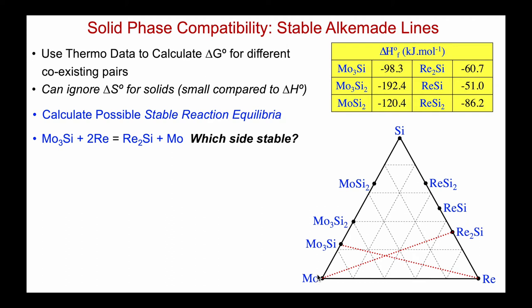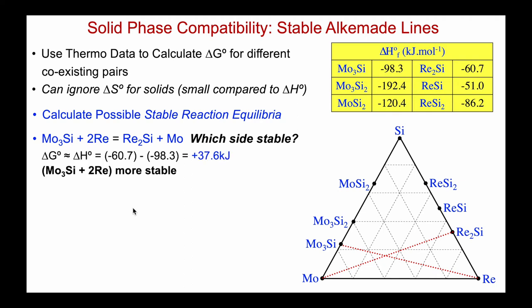Let's begin at the bottom. We could look at two possible cases: Mo₃Si plus Re stable, compared to Re₂Si plus Mo. So which is stable — the left side (Mo₃Si and Re, this tie line) or the other side? When we plug the data in, we find the enthalpy of this reaction — which we approximate as the free energy — is positive, which means the left-hand side is more stable. So now we know the Mo₃Si–Re pair of phases is more stable, and the tie line between Mo and Re₂Si can never exist.